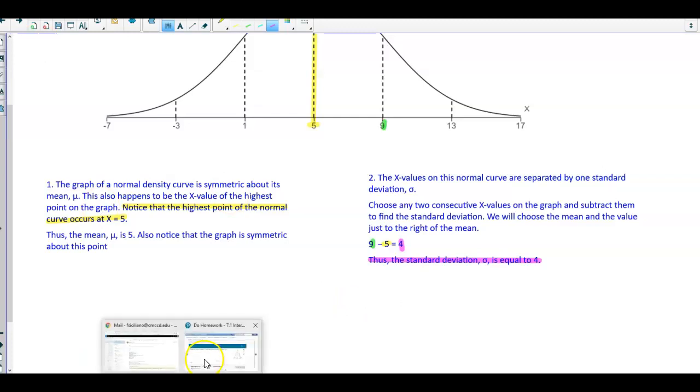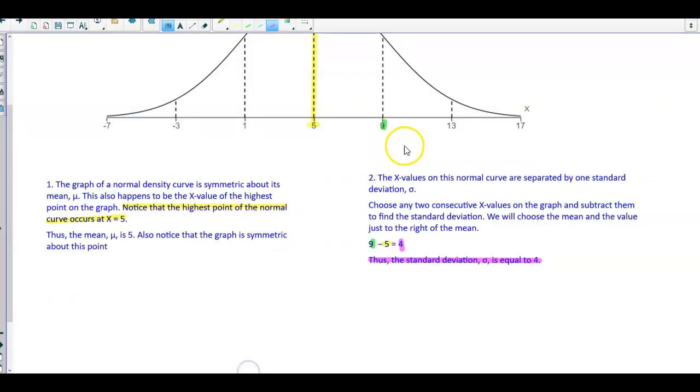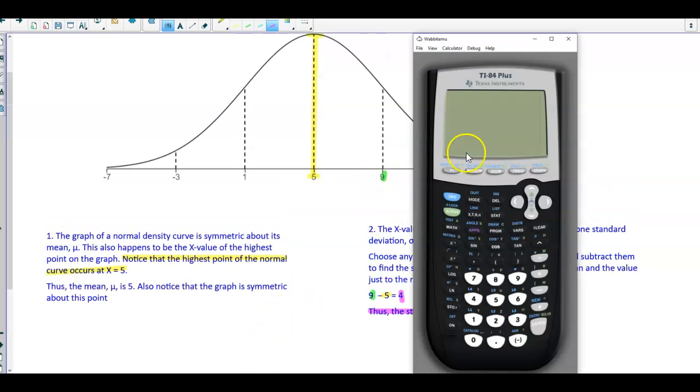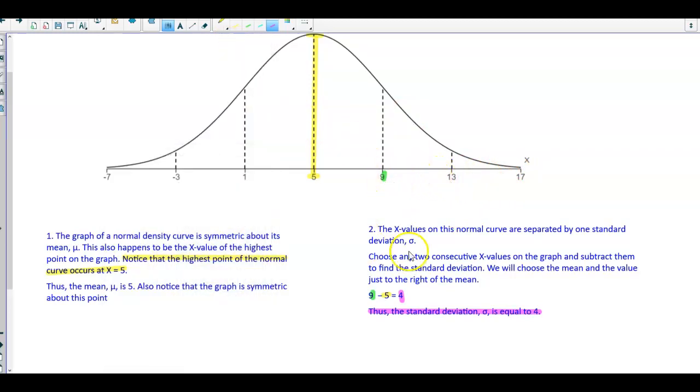Let's go back here and take a look. The standard deviation is equal to 4. Let's verify that. If we take 17 and subtract 13, we get 4. If we take 13 and subtract 9, we also get 4. 9 minus 5 is 4. 5 minus 1 is also 4. 1 minus negative 3 is positive 4. And negative 3 minus negative 7 is also positive 4.